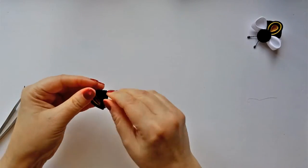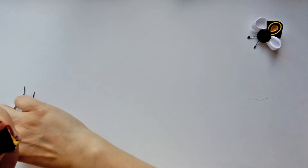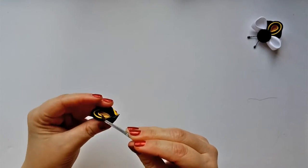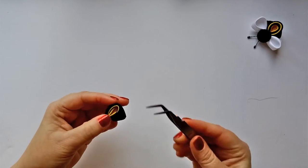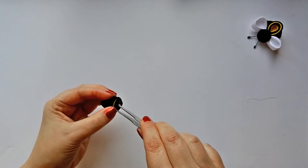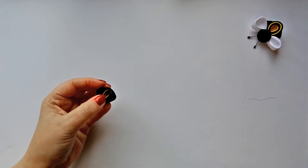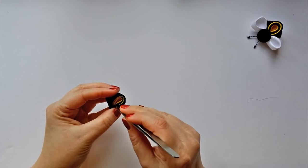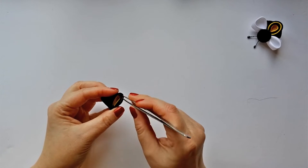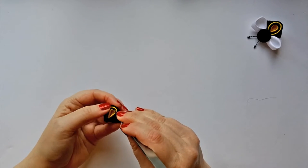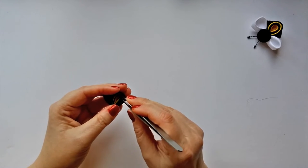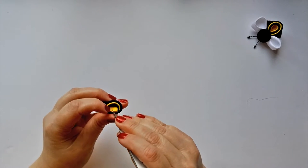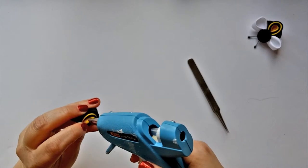Now use your tweezers to pull up any of the ribbon that's kind of slipped down. You'll want to be able to see all of the colors clearly: yellow, black, yellow, black. I like to put a small dot of hot glue in between the layers just to keep the ribbon from slipping back down.